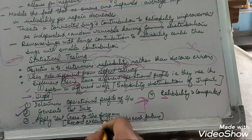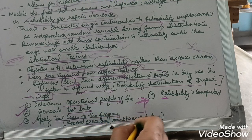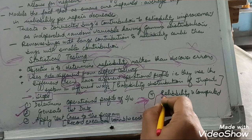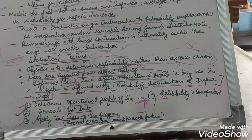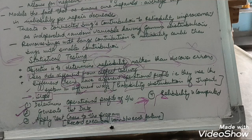By finding out the execution time between each failure, the reliability will be computed. Statistical testing is very important from an examination point of view. With this, we are done with the software reliability topic.